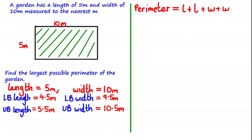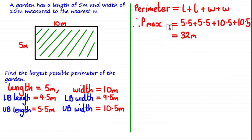The perimeter of this rectangular garden is equal to length plus length plus width plus width. In order to find the largest possible perimeter, we simply choose the largest possible values — the upper bound for length, which is 5.5 meters, and the upper bound for width, which is 10.5 meters. This gives us a maximum perimeter of 5.5 + 5.5 + 10.5 + 10.5, which equals 32 meters.